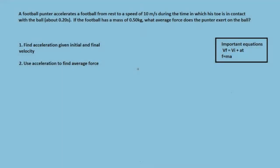Here we have a problem which says a football punter accelerates a football from rest to a speed of 10 meters per second during the time in which his toe is in contact with the ball, about 0.2 seconds. If the football has a mass of 0.5 kg, what average force does the punter exert on the ball?